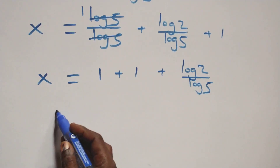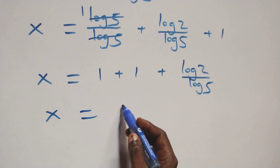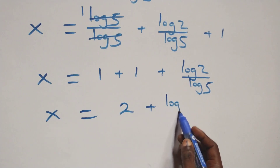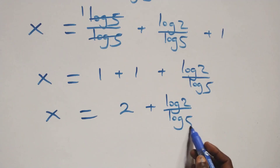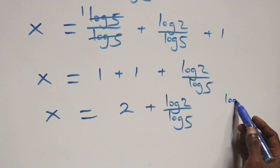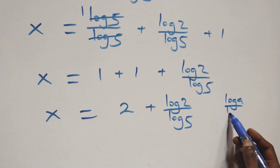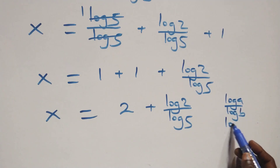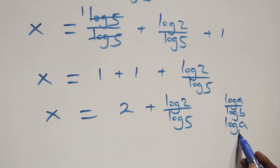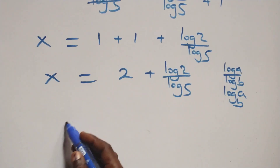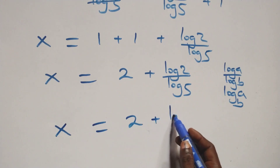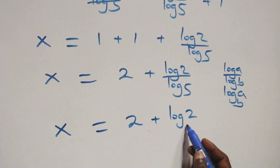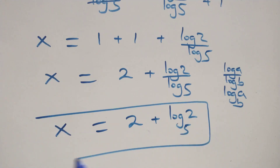This becomes x equals 1 plus 1 plus log 2 over log 5, that is x equals 2 plus log 2 over log 5. Applying the change of base rule — log a over log b equals log a to base b — we get x equals 2 plus log 2 base 5. So the value of x is 2 plus log₅2.